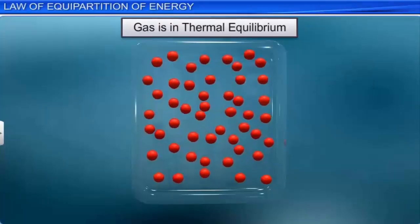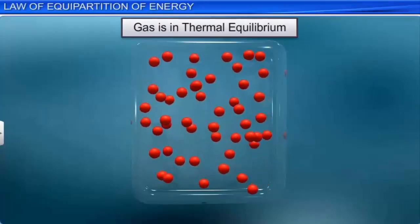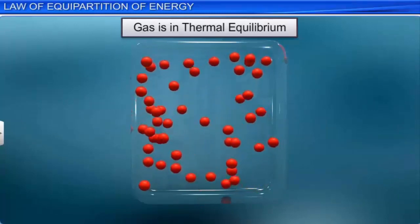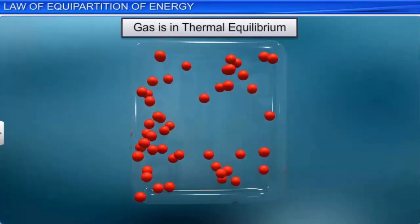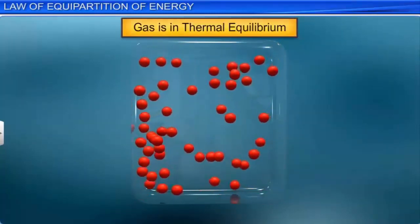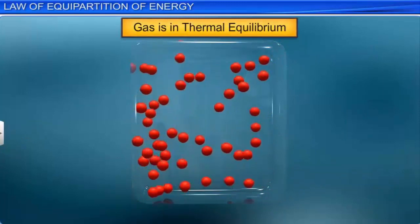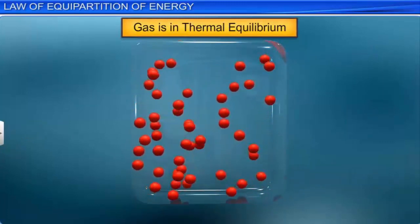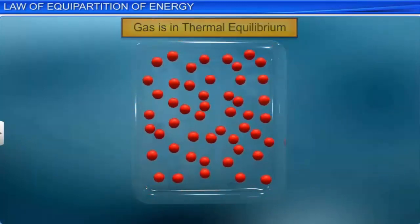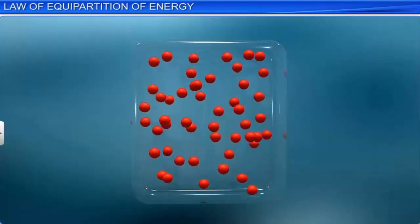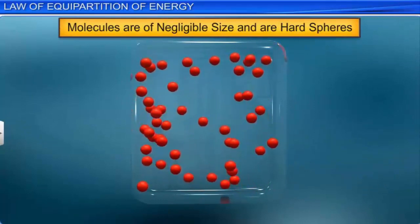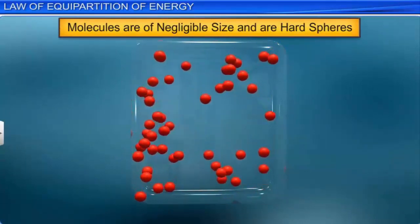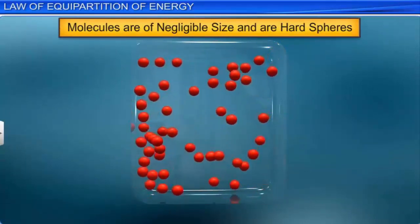Lighter molecules exhibit greater speed because the RMS speed is inversely proportional to the mass of the gas molecule. As the RMS speed increases, the diffusion of the molecules of the gas increases. The diffusion is also inversely proportional to the mass of the molecule at the given temperature, because at the given temperature, the average kinetic energy of the gas is fixed.